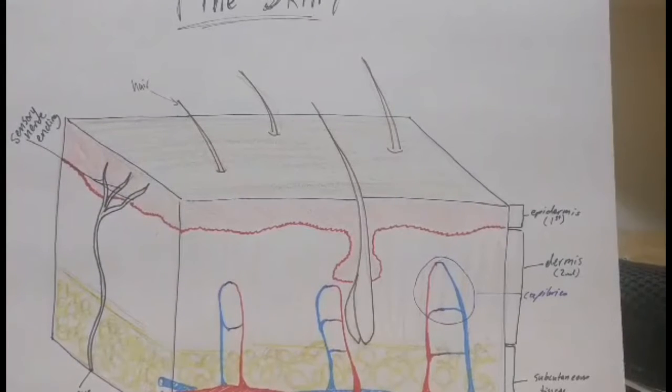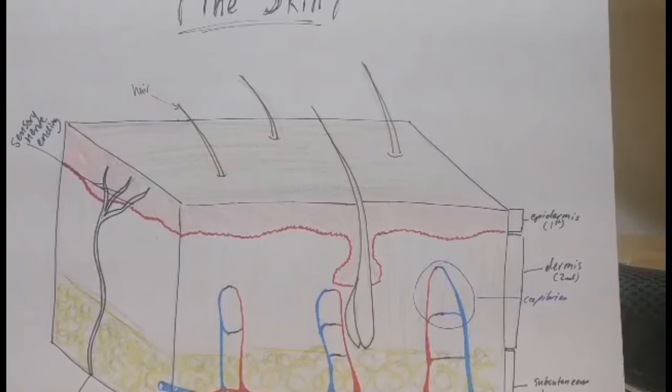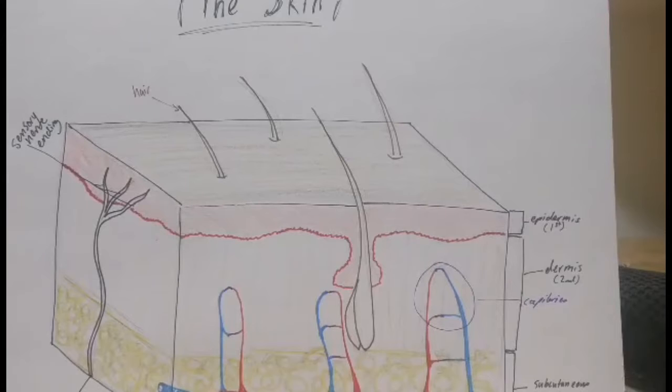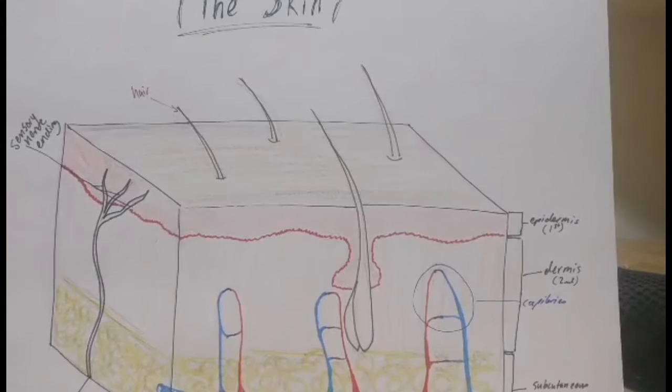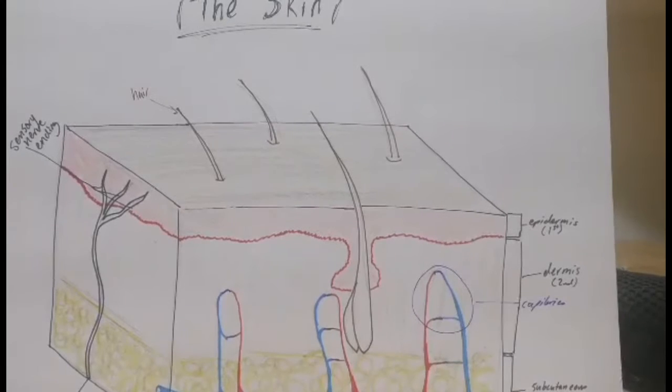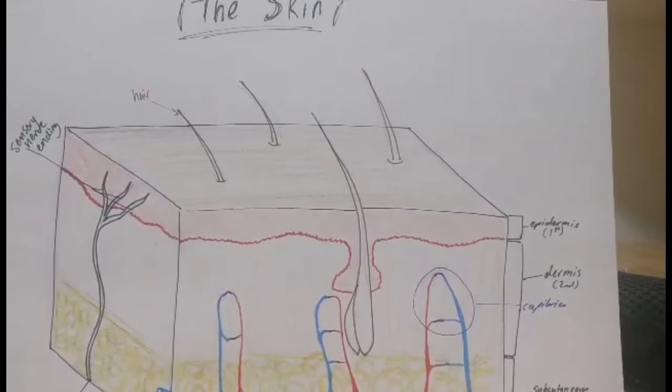The treatment for all of these are the same. You want to control any sort of bleeding, make sure you're preventing any further injury to the skin and tissue, and decrease your risk of infection. The first thing you want to do is wash your hands very well before you tend to anybody else's wound, to make sure you're not introducing any new bacteria.